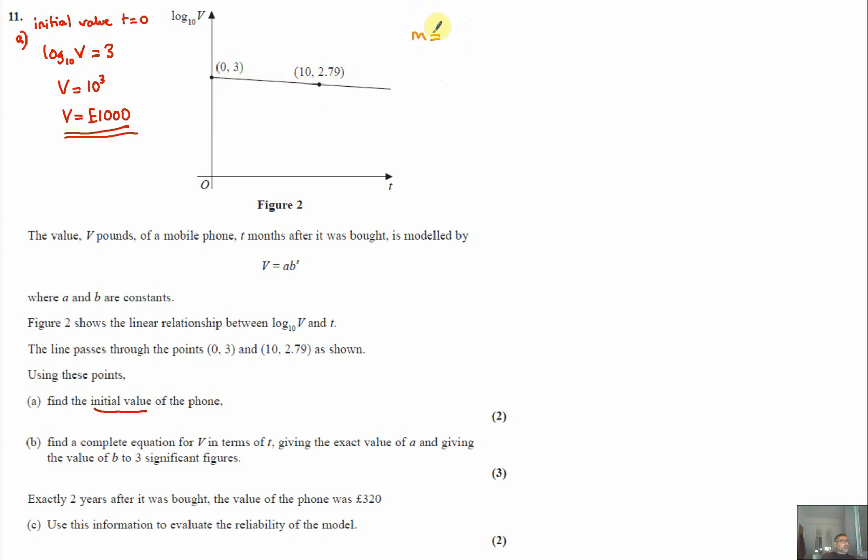So our gradient using y2 minus y1 over x2 minus x1, in this case that will be 2.79 minus 3 over 10 minus 0. And if you work that out on your calculators that will give you minus 0.021. So that's our gradient.